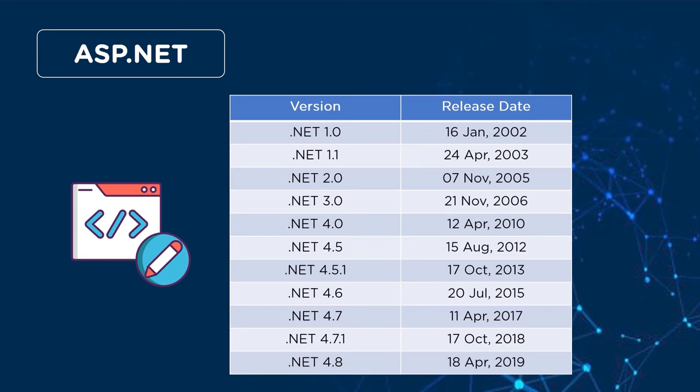After 4.0, version 4.5 was released on August 15th, 2012, adding features that help applications run faster and more scalably. Then on October 17th, 2013, .NET 4.5.1 was released with features of Entity Framework, Bootstrap, and SignalR for better communications.